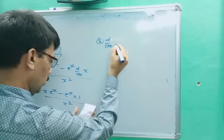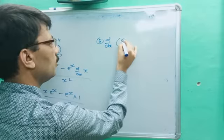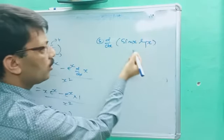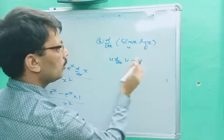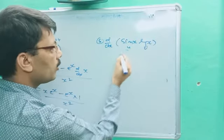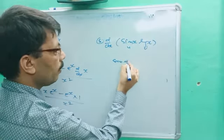Fifth question: d/dx of sin x · log x. This is u times v, so apply the product rule: u · d/dx(v) plus v · d/dx(u). We write sin x · d/dx(log x) plus log x · d/dx(sin x). So the answer is sin x · (1/x) plus log x · cos x.